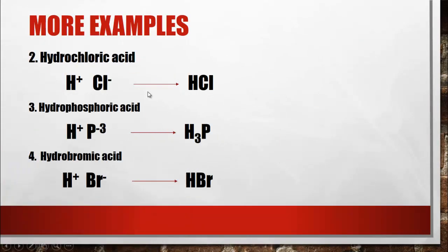Let us have more examples. For hydrochloric acid, it is composed of hydrogen and chlorine ion. Hydrogen has an oxidation number of positive 1, and chlorine has a charge of negative 1. Since the charges are already equal, there is no need to write any subscript, and therefore the chemical formula is HCl.